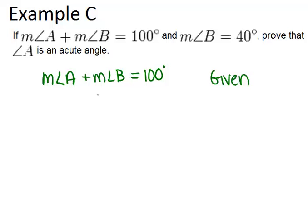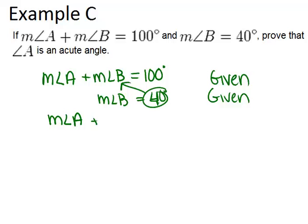We also know that the measure of angle B equals 40 degrees. Again, that is a given fact. Because angle B is 40 degrees and those things are equal, we can use the substitution property to substitute 40 in for the measure of angle B in the first equation. That would give us the measure of angle A plus 40 degrees equals 100 degrees. And that's the substitution property of equality.